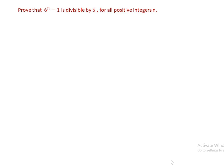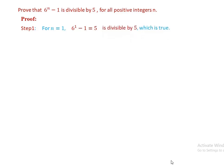Number 2: prove that 6 to the power of n minus 1 is divisible by 5 for all positive integers n. To prove this using the principle of mathematical induction, we follow these steps. Step 1: for n equal to 1, we have 6 to the power of 1 minus 1. Since 6 to the power of 1 is 6, we get 6 minus 1 is 5, and 5 is divisible by 5. This is true.